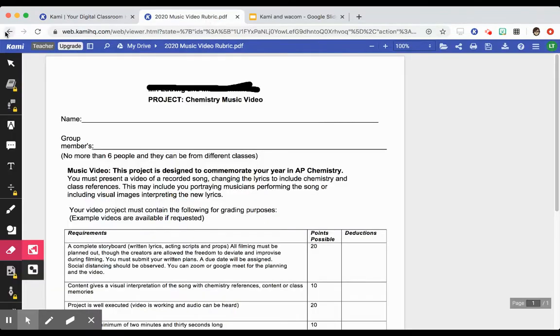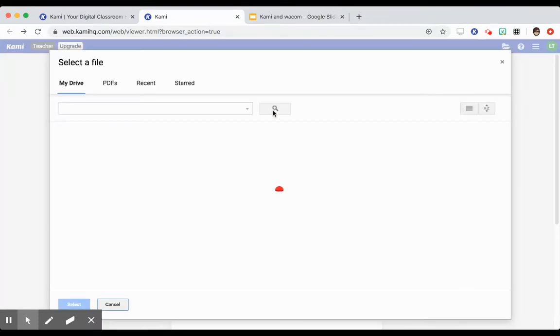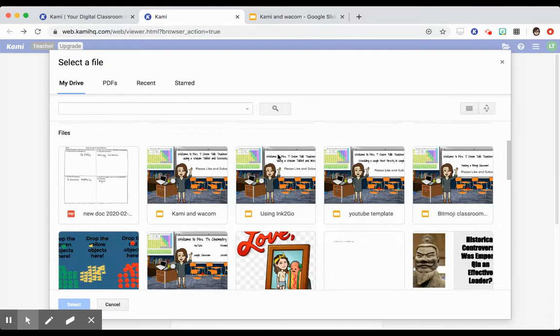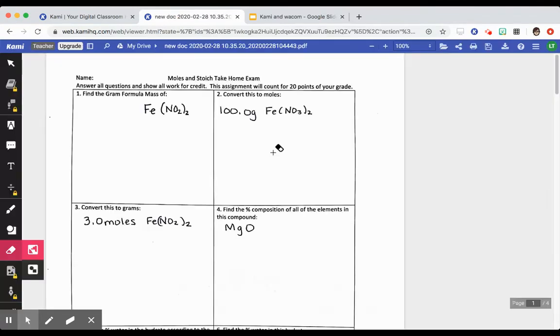When you're going to work in Kami, you can open from Google Drive. For example, I'm going to open this one up here.